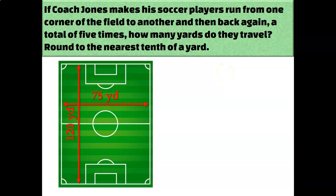All right, let's try a word problem. Coach Jones makes his soccer players run from one corner of the field to another and then back again. A total of five times. So how many yards do they travel? Round to the nearest tenth of a yard. And it gives us a picture of a soccer field. It tells us that it is 75 yards wide and 120 yards long.